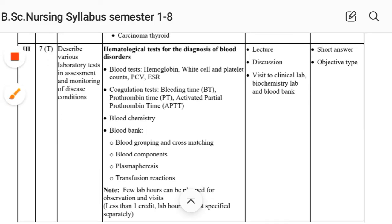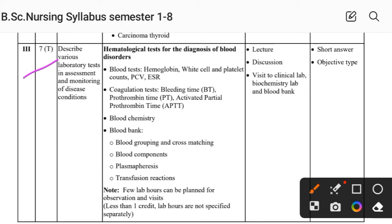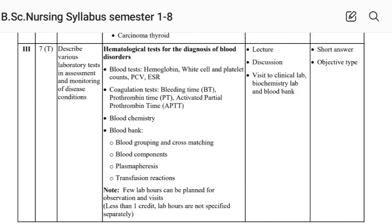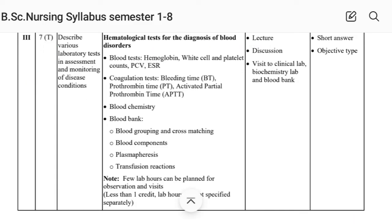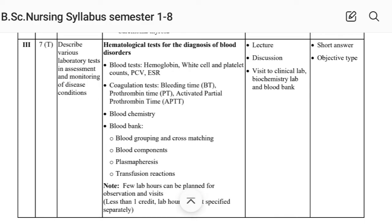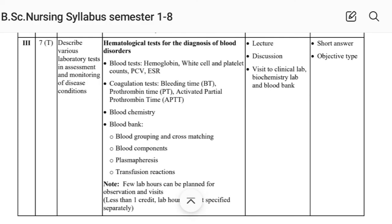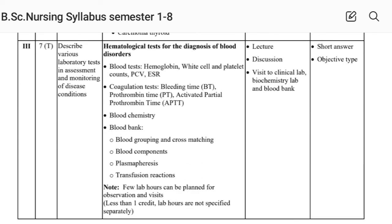Unit Third covers hematological tests for diagnosis of blood disorders: blood tests, coagulation tests, blood chemistry, and blood bank. That completes Pathology First for Semester Third.